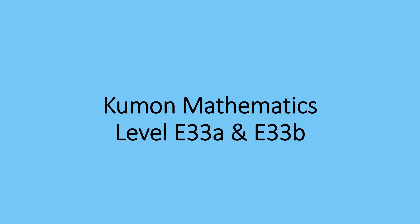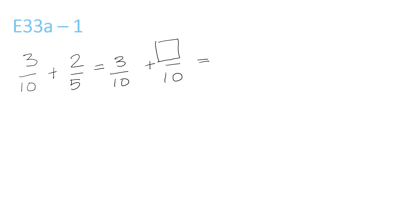Level E33A and E33B. For this first question, before you add, you have to make sure both the bottom numbers are equal. So 10 and 5, we have to make them both 10, because 10 is the lowest number that they both go into.